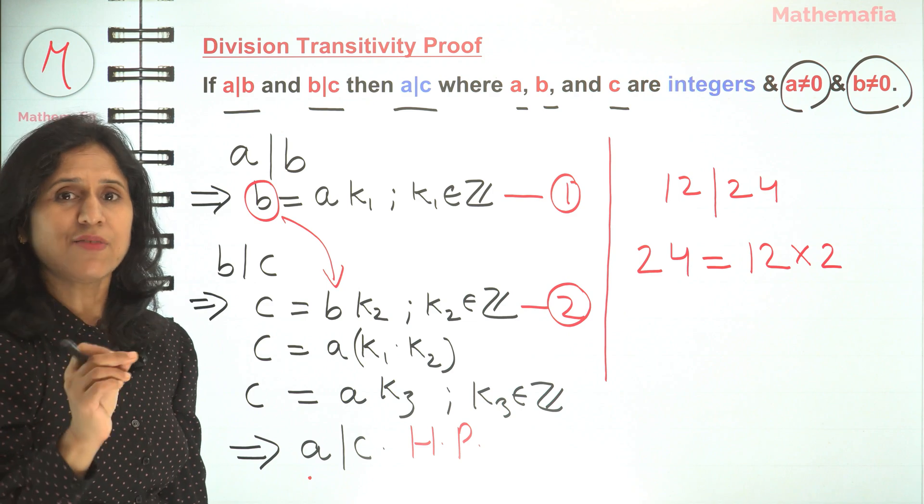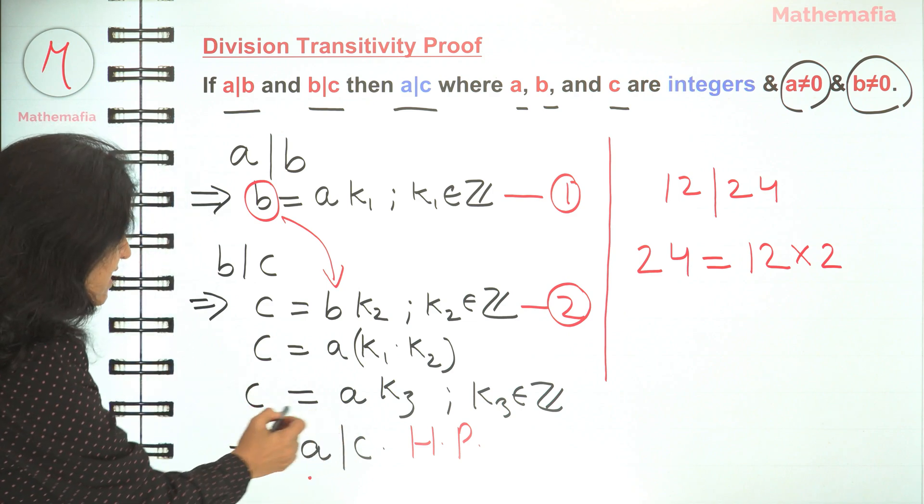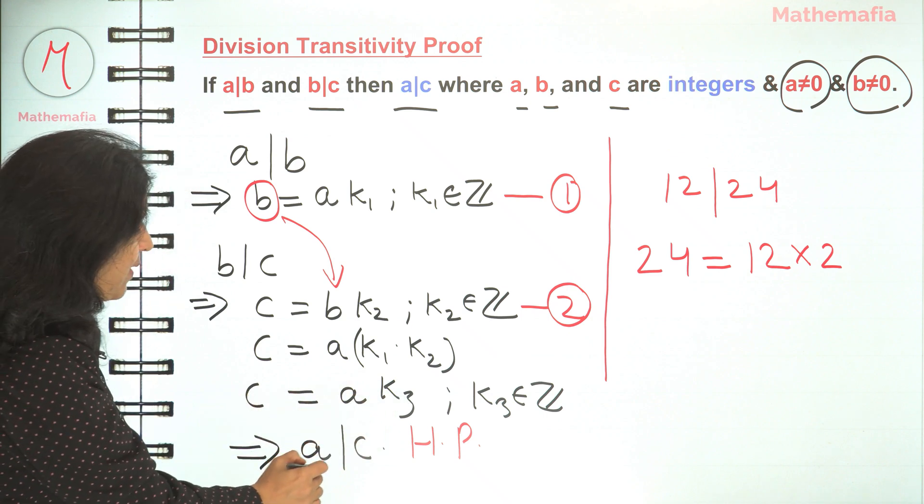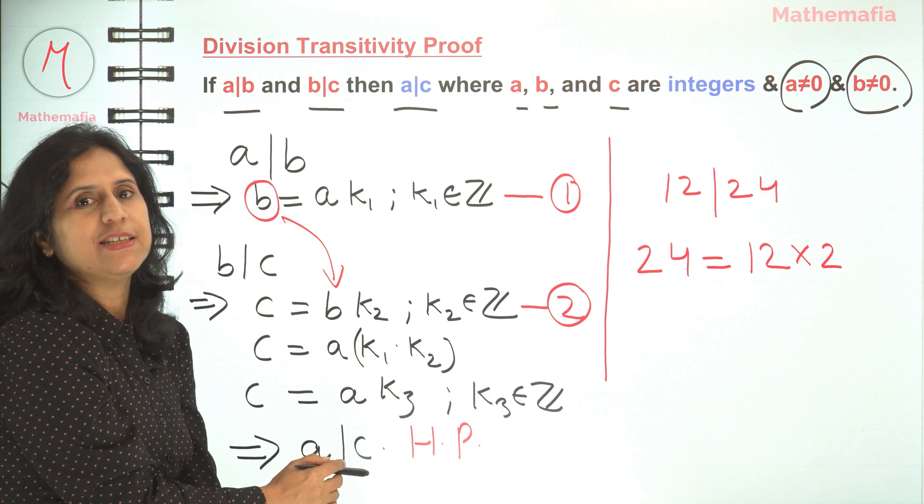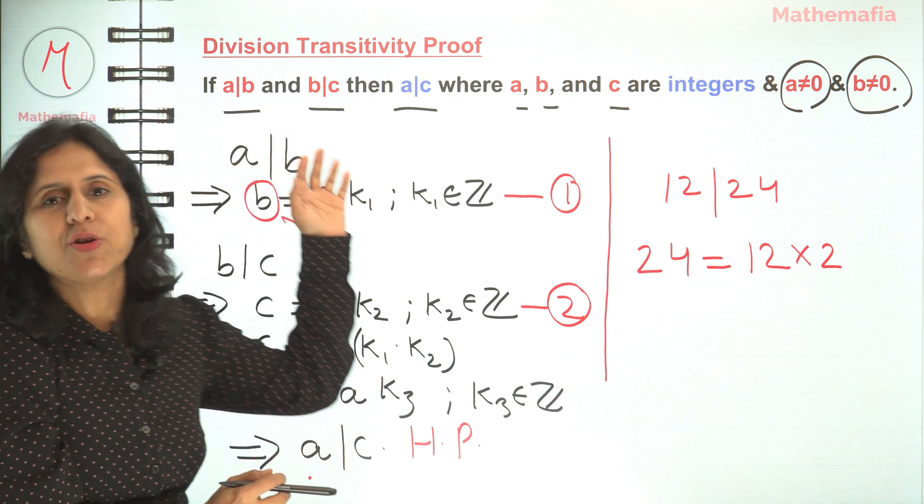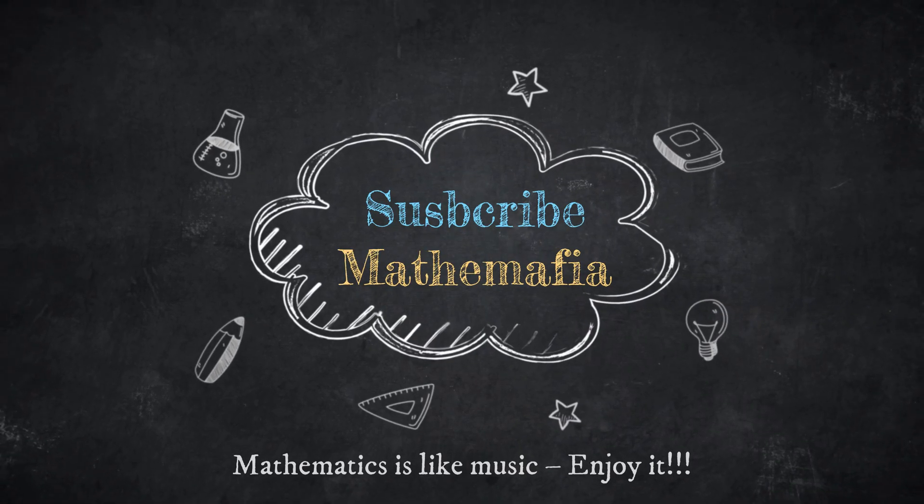Just in case you are still wondering why we have written a divides c—because we have just proved that c is a multiple of a. So that's why we can write that a divides c. So I hope you have now understood the division transitivity theorem and its proof. That's it for this video. Keep watching Mathemafia.